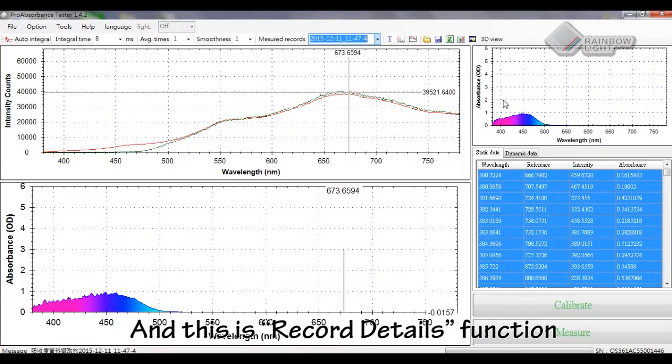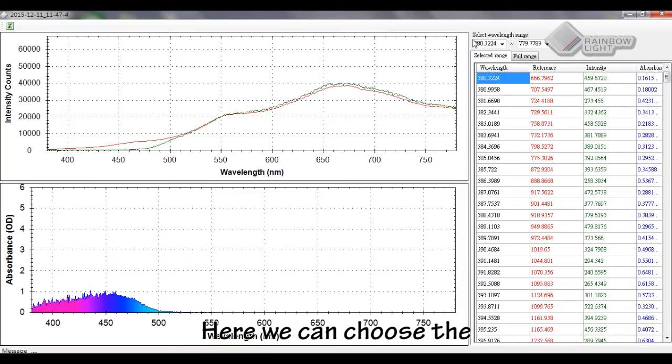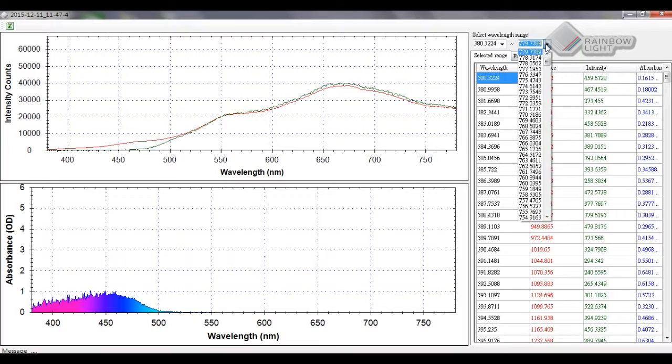And this is the record details function. Here we can choose the specific wavelength range to see the data.